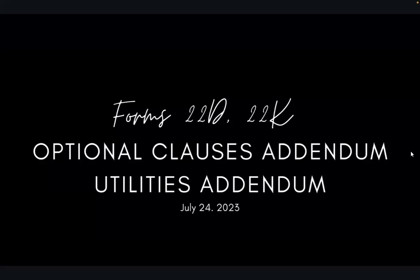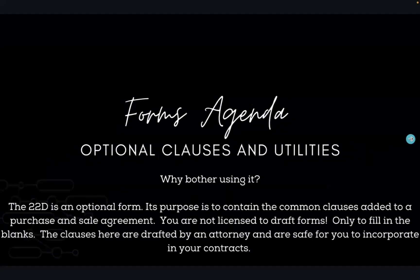This week we're going to look at Form 22D and 22K. The 22D is called the optional clauses addendum, and 22K is the utility addendum. The purpose of the 22D is to provide a list of optional clauses we can add to the purchase and sale agreement — it contains the most commonly used clauses.